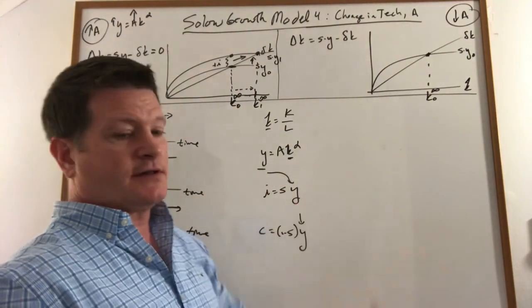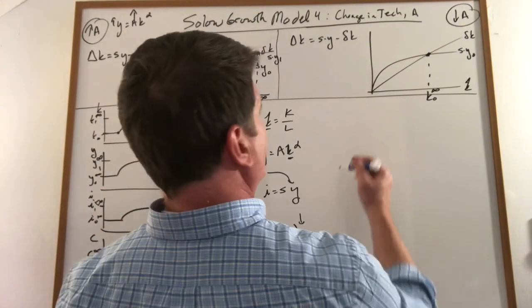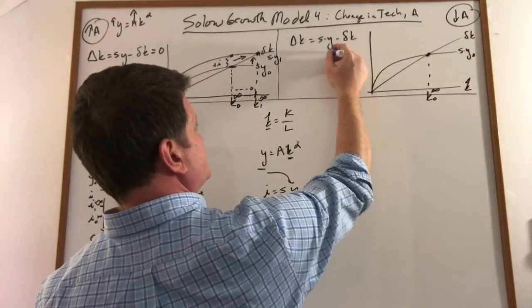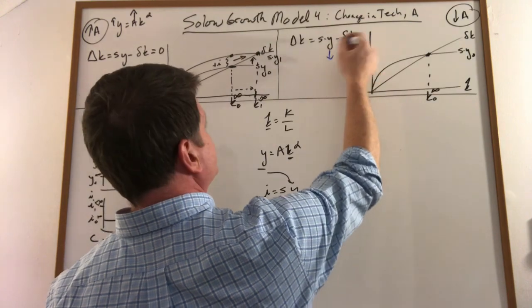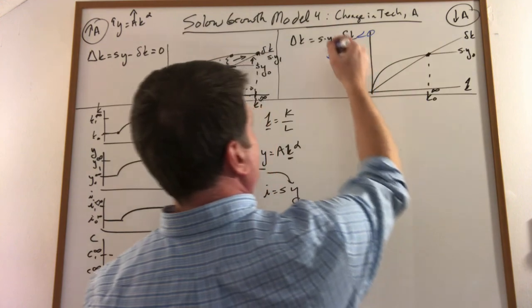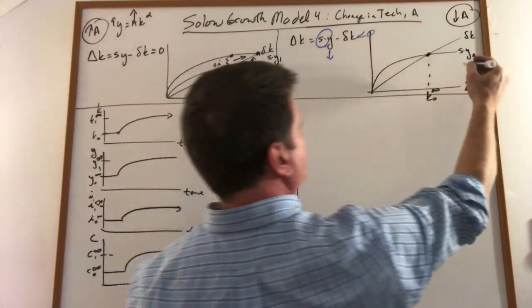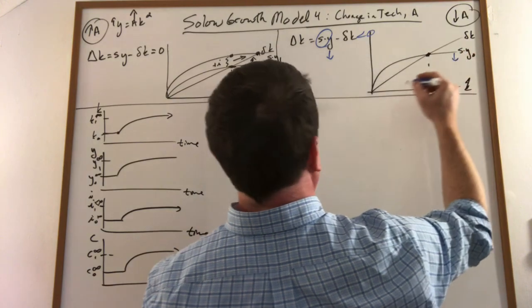What happens in this graph? Well, pretty straightforward. Technology gets worse, which is going to lower this, which means suddenly this is going to turn negative. Why? Because investment is not going to be enough to offset depreciation, so we're going to shift this down.